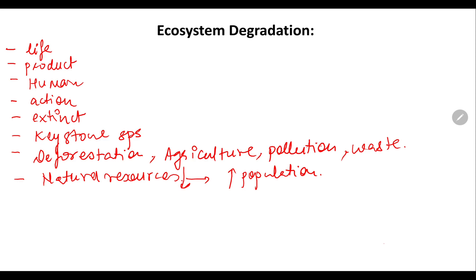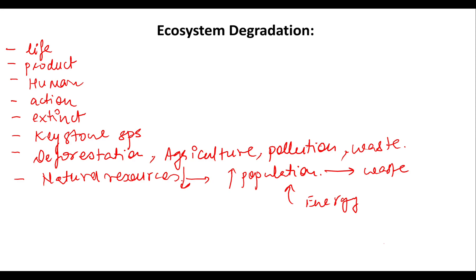Affluent societies consume resources and energy in large proportions and produce waste. It means that a large part of the population is utilizing energy in huge amounts and producing waste. These resources are extracted from the natural ecosystem, which affects the important functions of the ecosystem, and this is how ecosystem degradation is taking place.